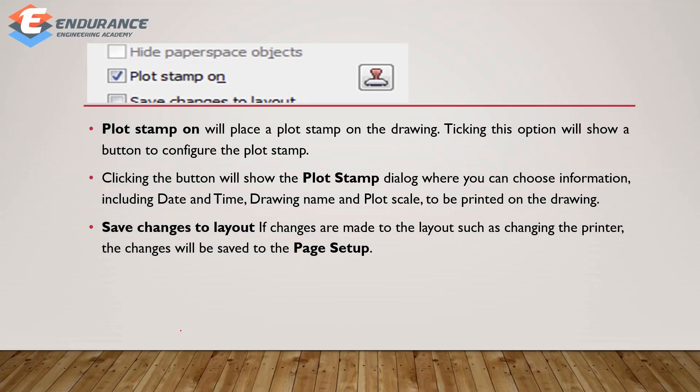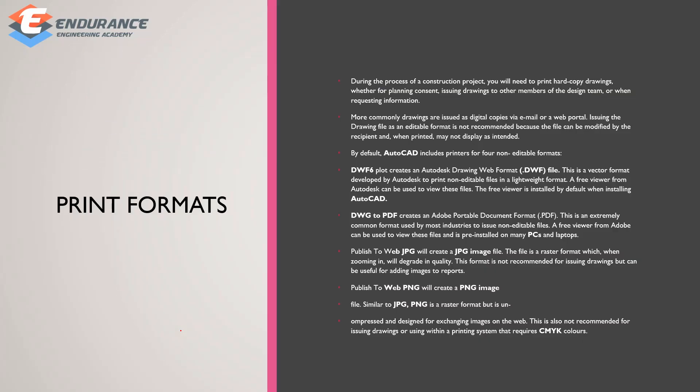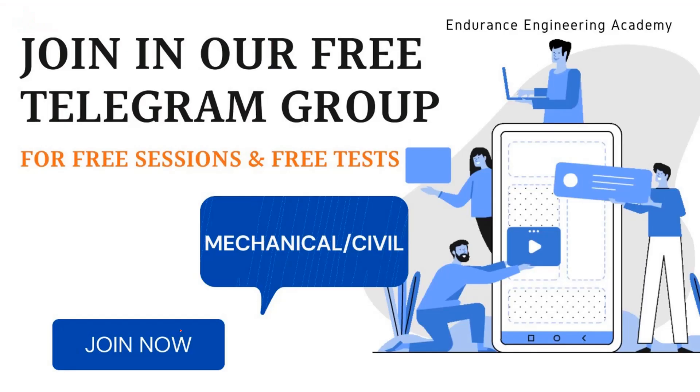The next one is Plot Stamp On — you can show a stamp box in your office. The next one is Print Format. During the process of a construction project, you will need to print hardcopy drawings. For example, if you have a team or a hire official, you can use a site. You can attach AutoCAD to the printer and print the file as .dwf, and you can also print the PDF part.